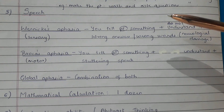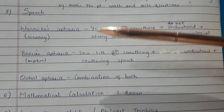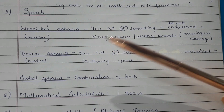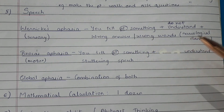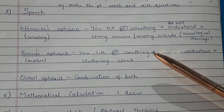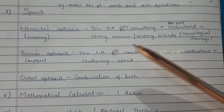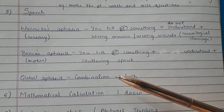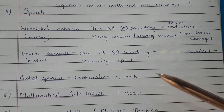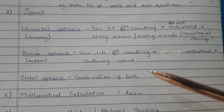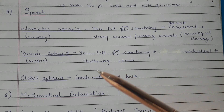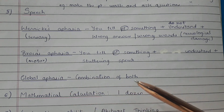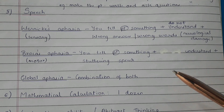Speech is categorized into three types: Wernicke's aphasia, Broca's aphasia, and global aphasia. In Wernicke's aphasia, you tell the patient something and they do not understand — they give wrong answers or use wrong words. This involves neurological damage and is sensory. In Broca's aphasia, the patient understands but has stuttering speech, so it is associated with the motor part. Global aphasia is a combination of both Wernicke's and Broca's aphasia.